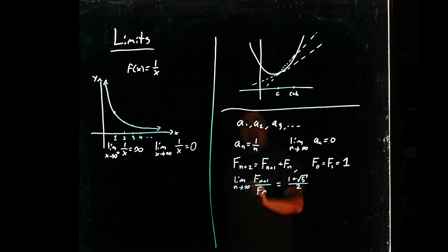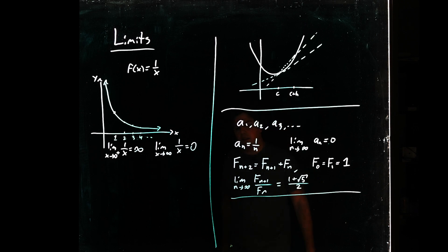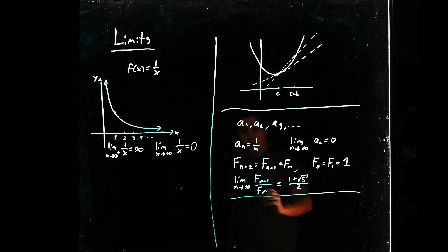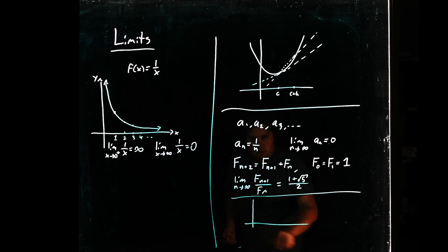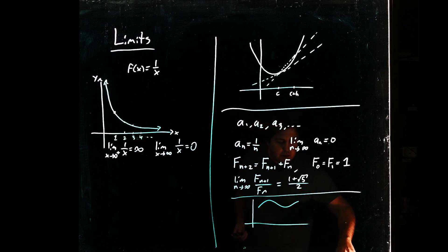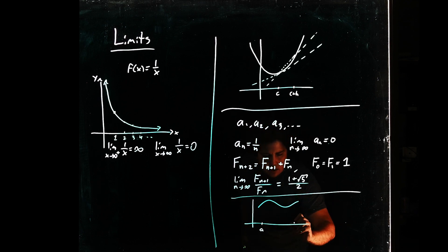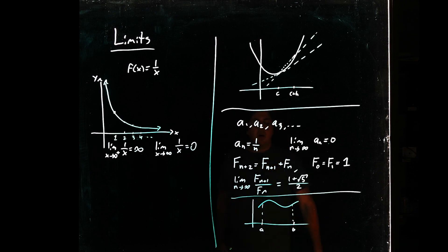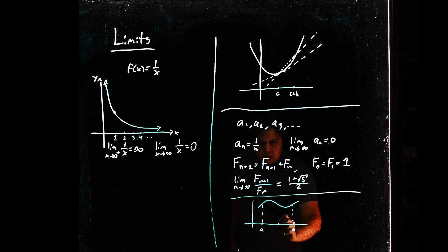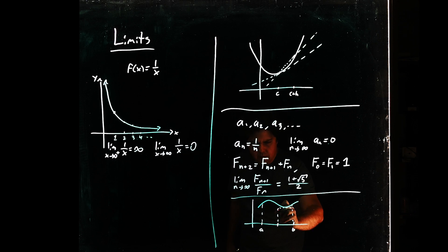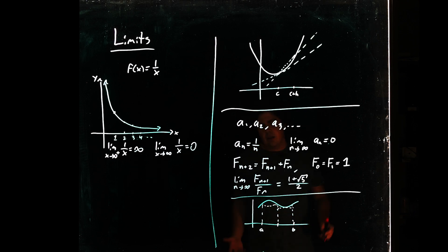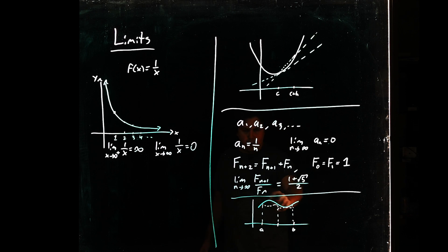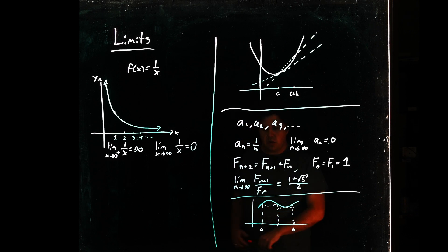So a third limiting process, which comes up in calculus, is the concept of the integral finding an area under a curve. So if you have some curve, let's say like this, you might want to find the area under it between a and b. So how would you do such a thing? Well, one way is you can approximate it. We know how to compute the area of rectangles, so I can, say, break this interval in half, take this rectangle that lies under the curve and this rectangle that lies under the curve, and I can say, okay, the area under this curvy line is at least the area of the sum of these two rectangles.